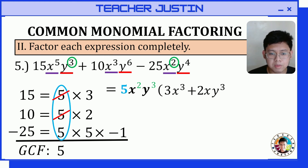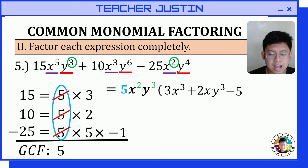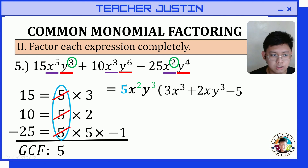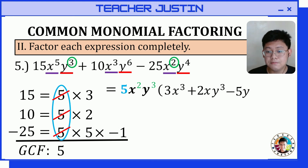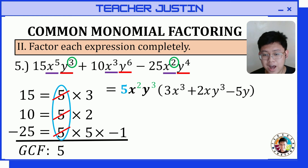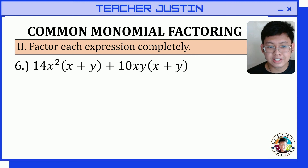For the third term, the coefficient is negative 25. Removing 5 leaves negative 5. Dividing x squared by x squared gives 1, so x cancels out. Dividing y raised to 4 by y raised to 3 gives y raised to 1, or just y. So the third term is negative 5y. Therefore, the factor of this polynomial is 5x squared y raised to 3 times the quantity 3x cubed plus 2xy cubed minus 5y.